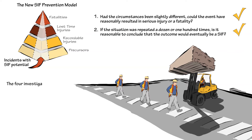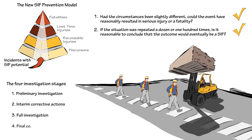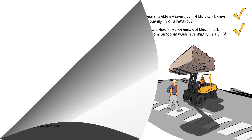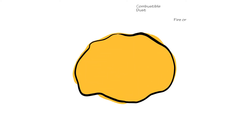We can then use our incident investigation processes to determine the root cause of the incident and apply appropriate controls. Let's look at some examples of categories or buckets in which incidents could occur in our industry.